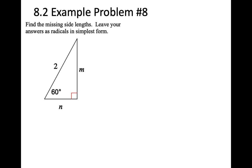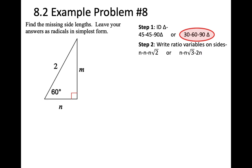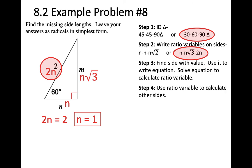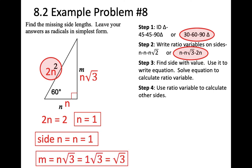Problem 8: Step 1, it's a 30-60-90. Step 2, ratios are N, N root 3, 2N. Step 3, find the side with a constant — 2N equals 2, so N equals 1. Step 4: side N equals N, which equals 1. Side M equals N root 3, which is 1 root 3 — but just like we say X instead of 1X, we write root 3. So side N equals 1 and side M equals root 3.